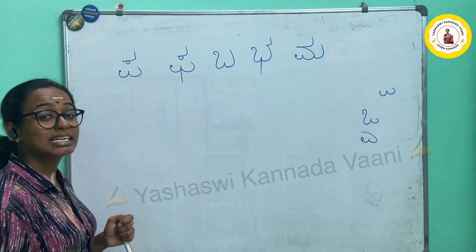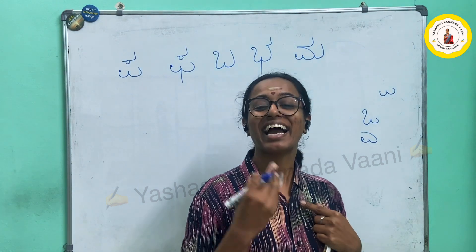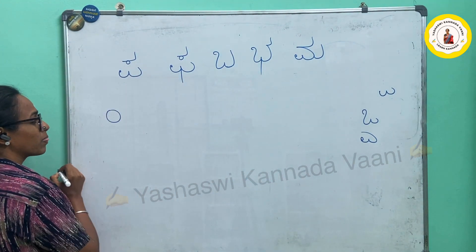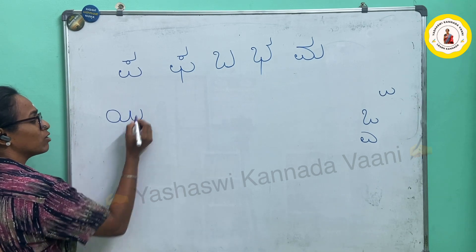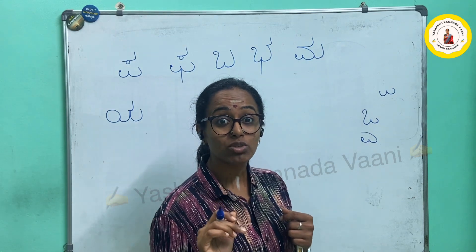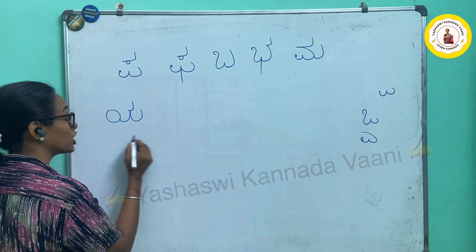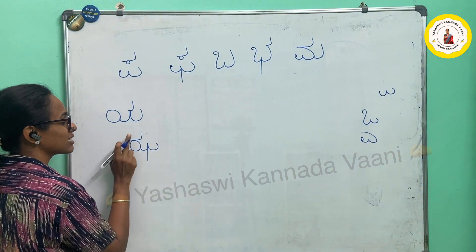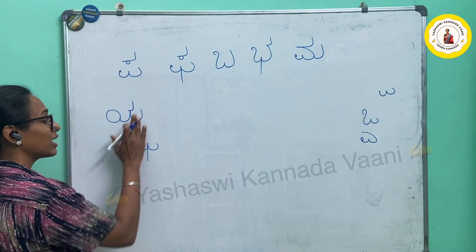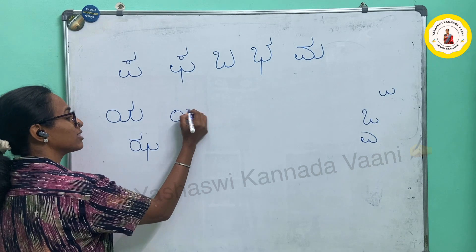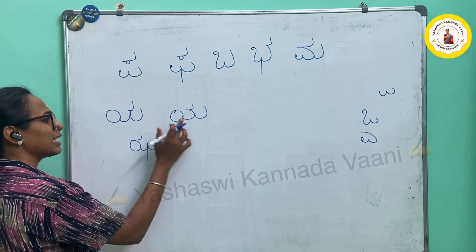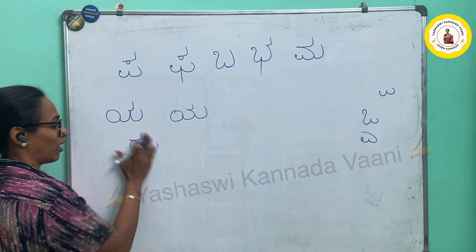The next letter is YA — YASHASVINI. How do I write? Zero, then write a W. Here you will put a TALYA in the middle. Remember there is one more letter similar to this — letter JA. But letter JA has a zero at the head and a line here. For YA we don't have that. This is how you write YA — slightly curved like this.